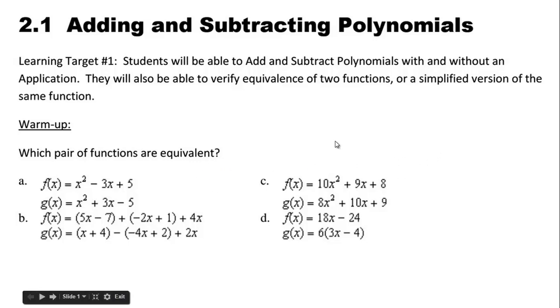For the first one, if we sub in f(0) for x, we get 5. If we sub in 0, these two terms go away and we end up with 5. If we sub in g(0), we get negative 5. So these two can't possibly be equivalent.